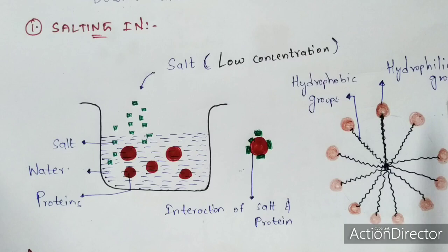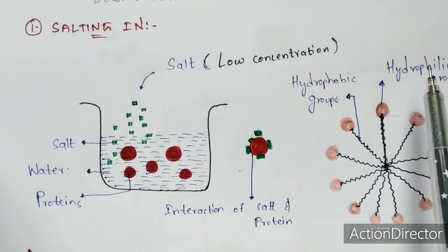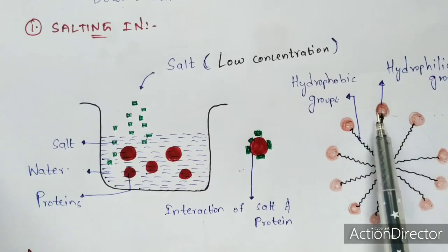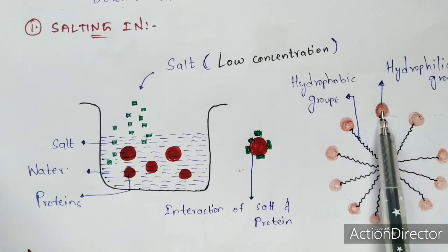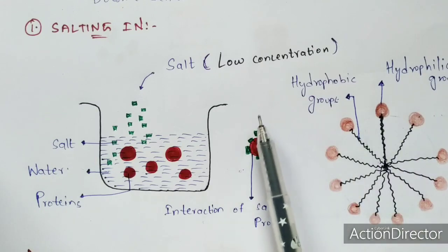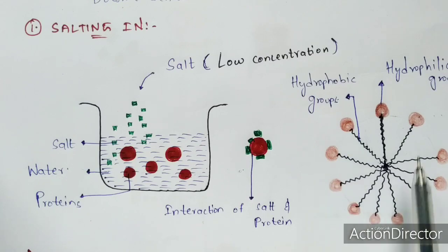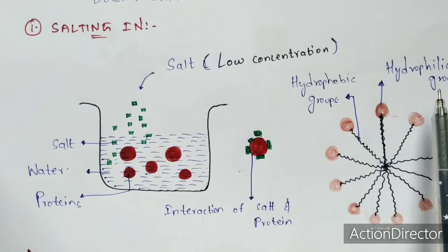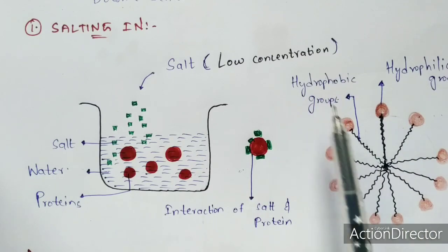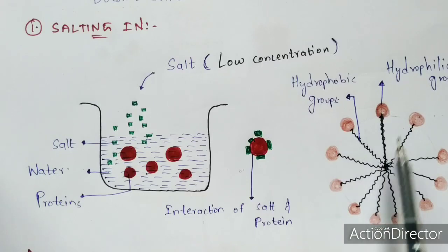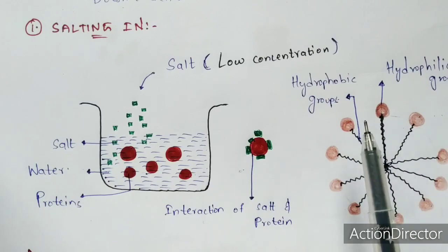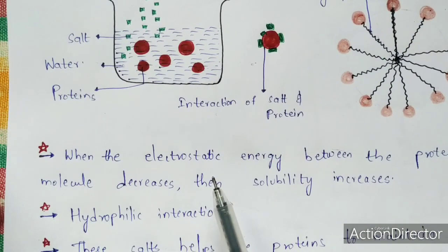The hydrophilic ends are presented towards the outer side, so they can interact with the salt. Proteins are made up of amino acids, and the hydrophilic groups of amino acids interact with the salt because they are exposed towards the outside. The hydrophobic groups interact towards the inner side, not the outer side. So the salt gets attracted towards the hydrophilic ends only, because they are exposed towards the outside. That is why this interaction is called hydrophilic interaction.